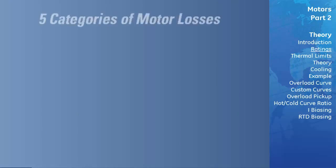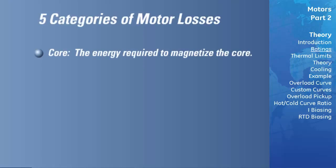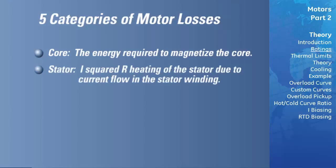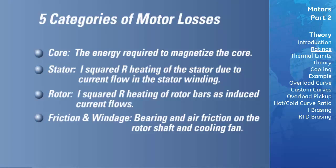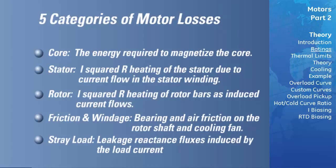There are five categories of motor losses. Core losses are comprised of two components: the energy required to magnetize the core and eddy current losses in the stator core. Stator losses are due to the I-squared R heating of the stator due to current flow in the stator windings. Rotor losses are due to the I-squared R heating of rotor bars as induced current flows. Friction and windage losses are due to bearing and air friction. Stray load losses are due primarily to leakage reactance fluxes induced by the load current. Core, stator, and rotor losses typically make up greater than 80% of the total motor losses.